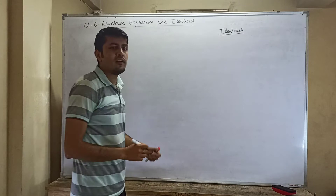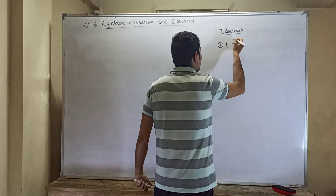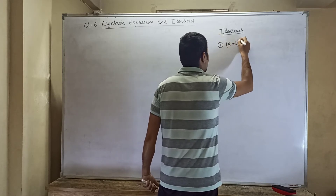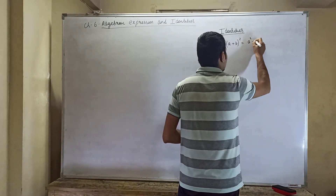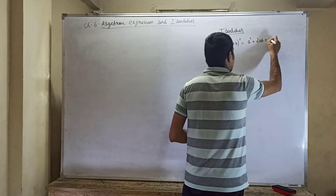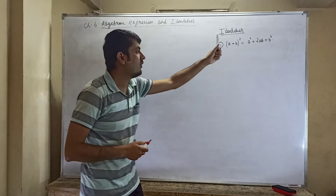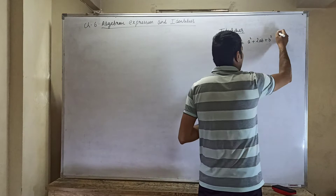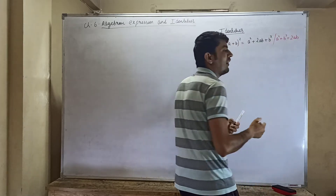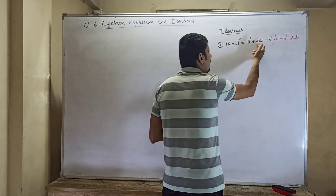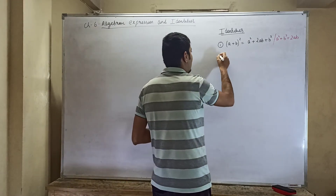The first identity you have already done in class 7: (a + b) whole squared equals a squared plus 2ab plus b squared. You can also write it as a squared plus b squared plus 2ab — it is the same. Whether you write b squared here or there, it doesn't matter. So let us go to the next identity.